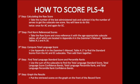The second step is to find norm reference scores: take the raw score and cross-reference it with the age-appropriate subscale tables, all located in Appendix A in the examiner's manual between tables A1 and A16. The third step is to compute the total language score using Appendix A, table A17, to find the standard scores from the AC and EC subscales, then add them together.